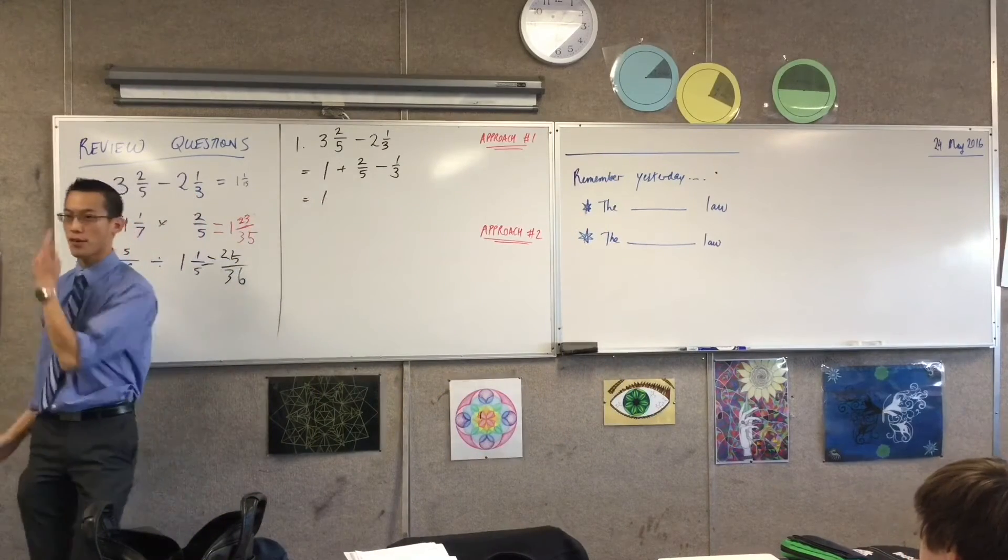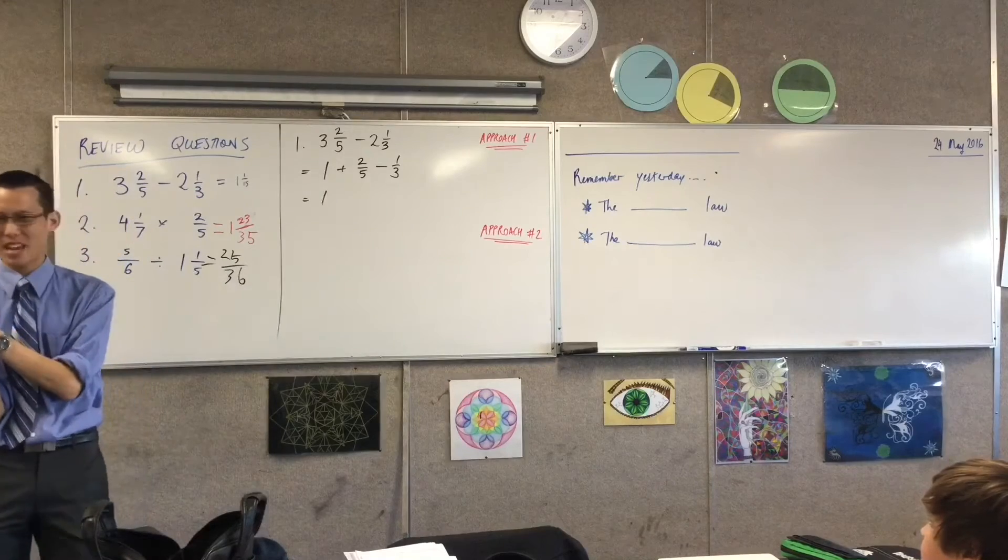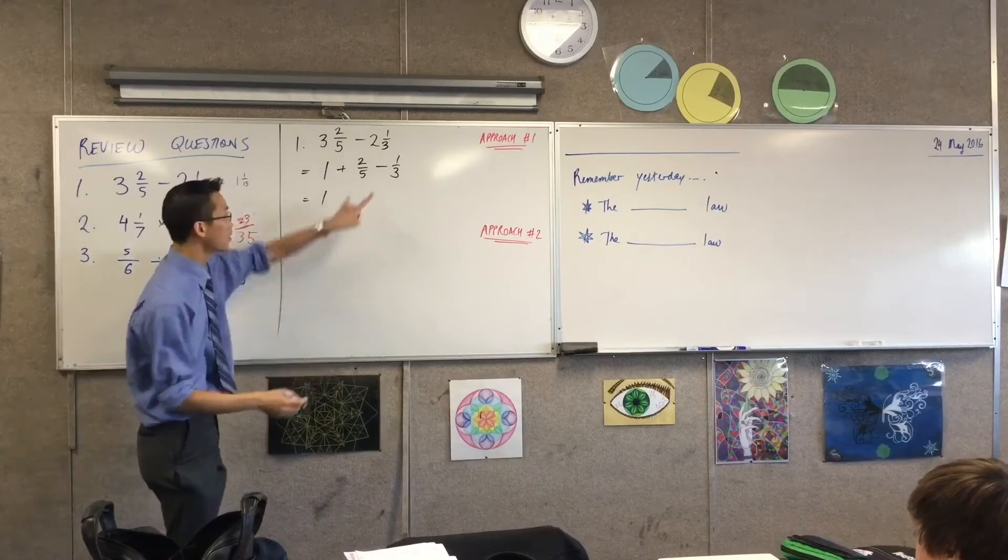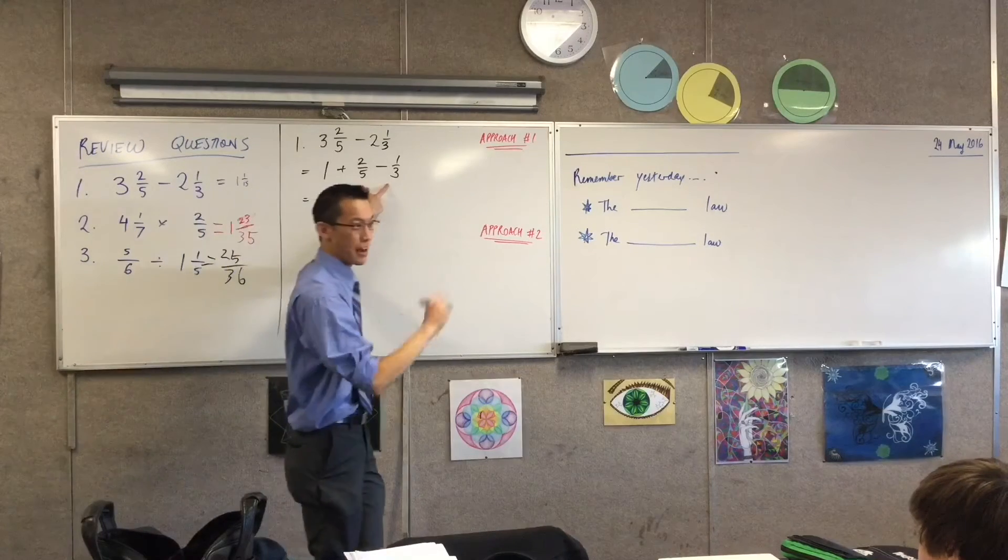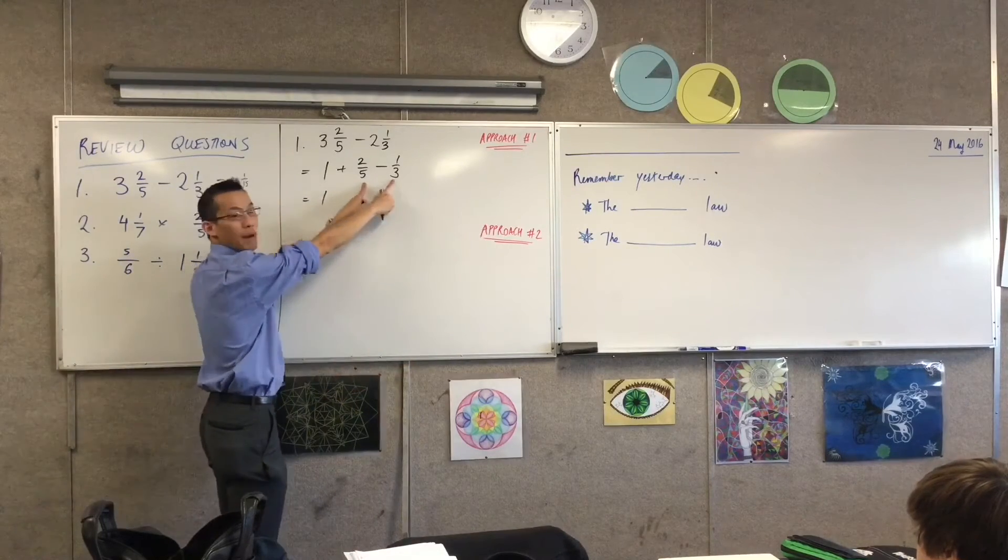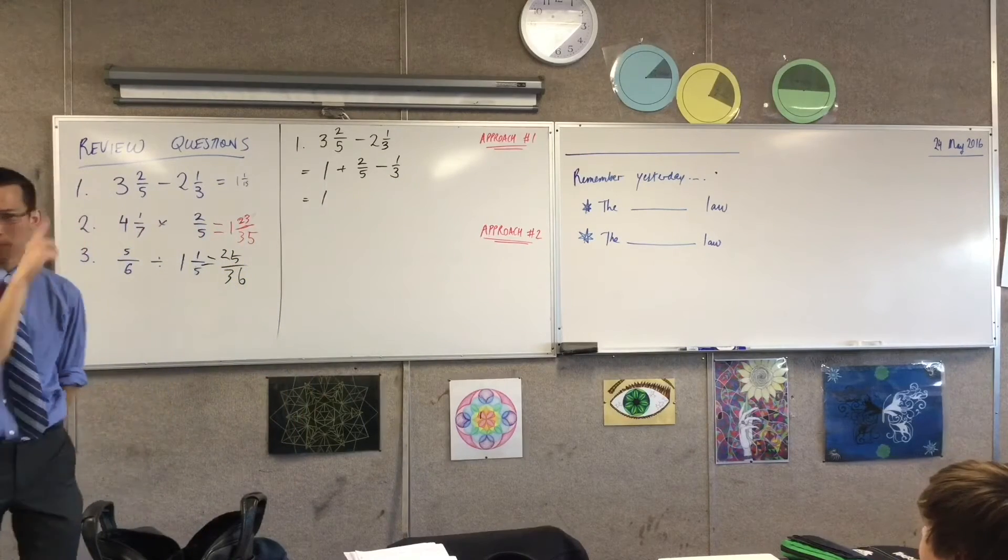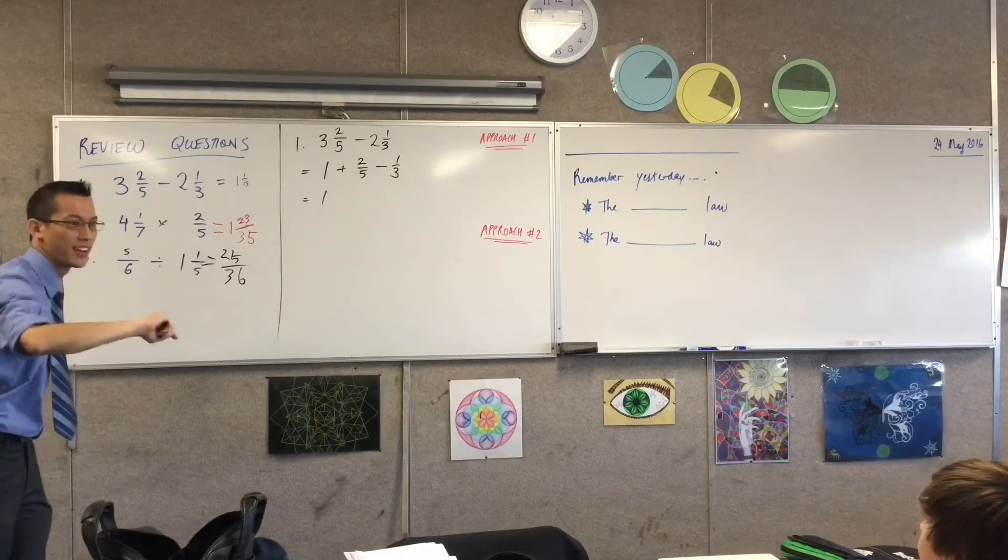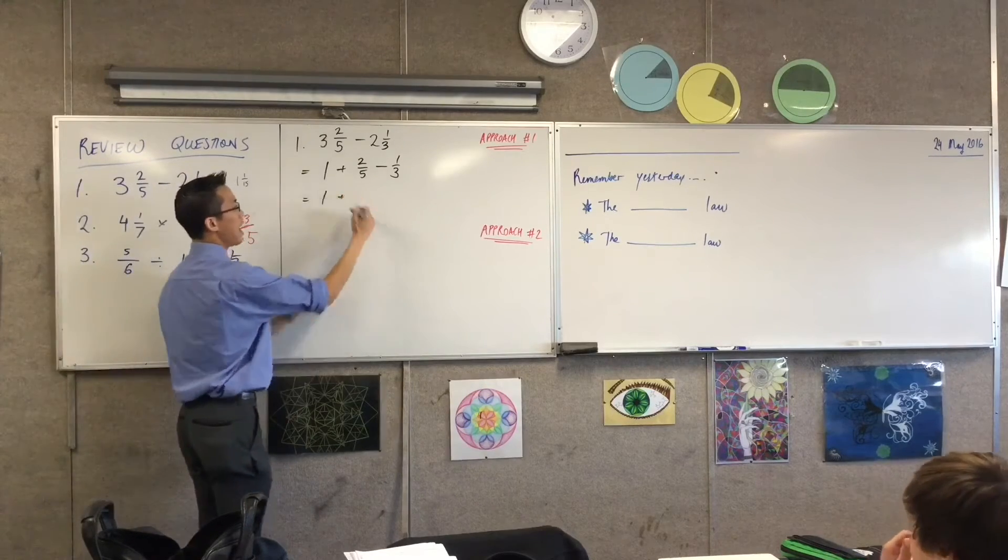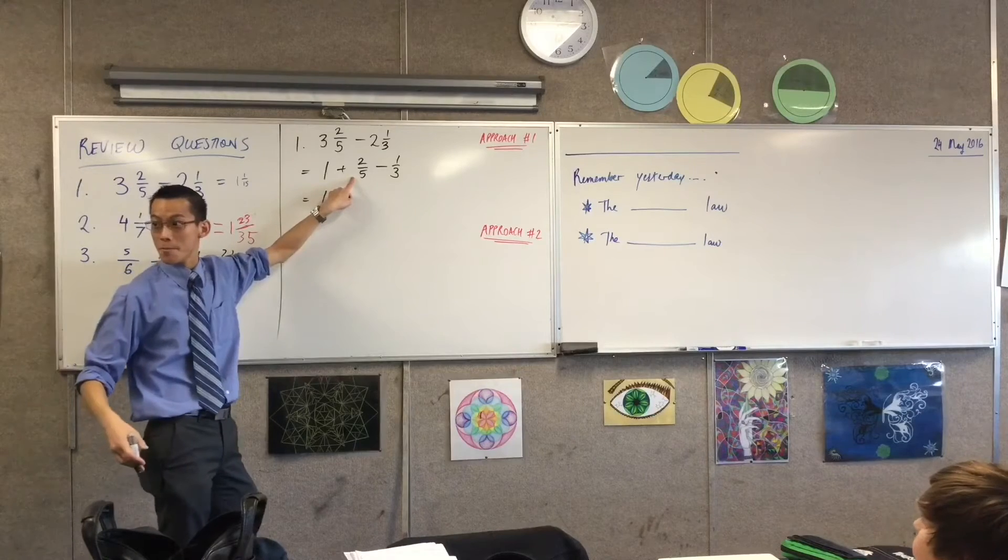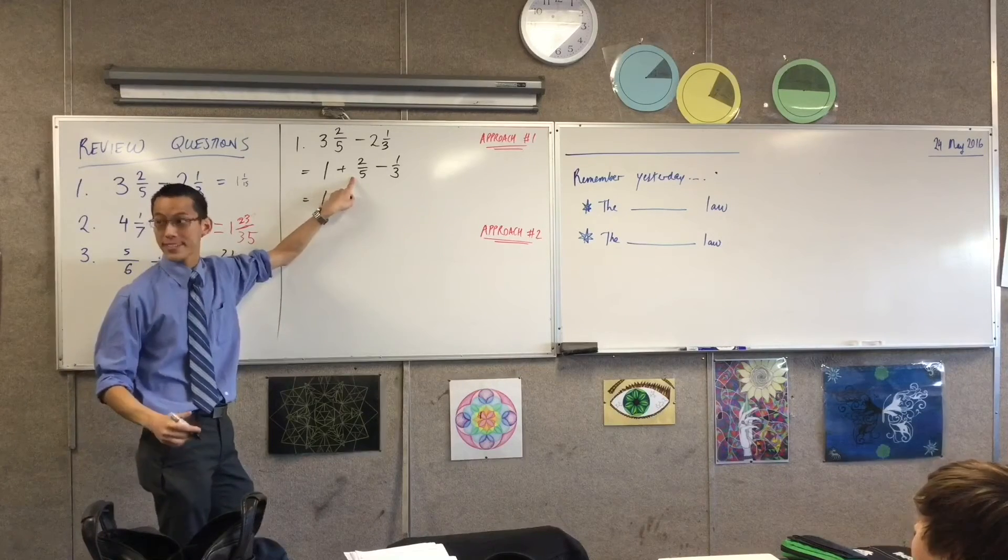I've still got my one out the front. These two fractions don't talk the same language, so what shall I do with them? I want a common denominator and the best way to do that is the lowest common multiple of my denominators. Three and five, what's the smallest number that is a multiple of both of them? Fifteen, perfect. How do I turn this into a fraction over fifteen? By times the denominator and the numerator by three.